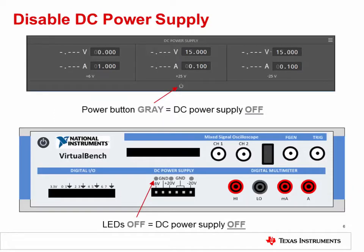Make sure to disable the DC power supply before setting up the test PCB. In the VirtualBench software, click the power button in the DC power supply area to turn off power. Also check the front panel of the VirtualBench unit to make sure the LEDs are off. Finally, make sure that the function generator is also off.